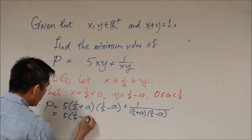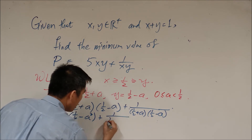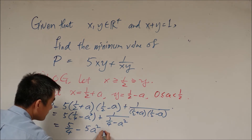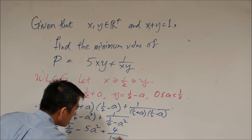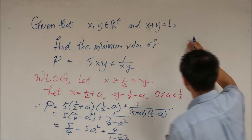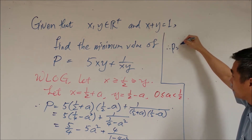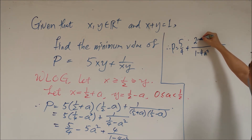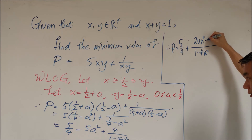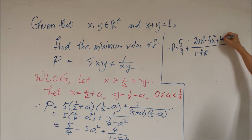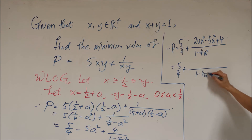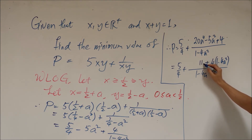Substituting, p equals 5 times (1/4 minus a squared) plus 1 over (1/4 minus a squared), which equals 5 over 4 minus 5a squared plus 4 over (1 minus 4a squared). Expanding further, p equals 5 over 4 plus (1 minus 4a squared) times 20a to the fourth minus 5a squared plus 4, all over (1 minus 4a squared). This gives terms with 4 times 4a squared plus 11a squared.